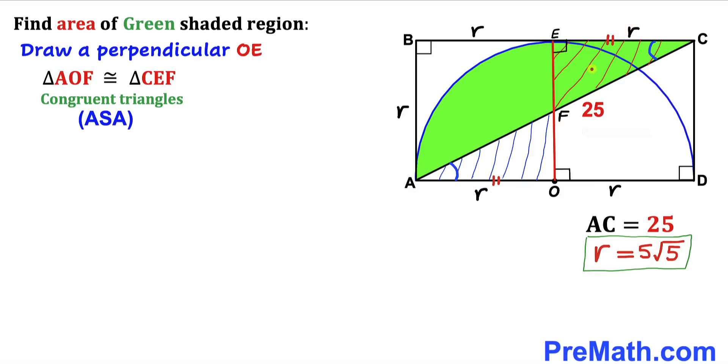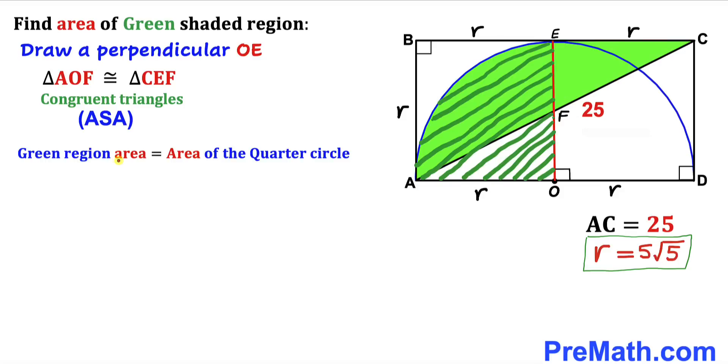Moreover this side EC is equal to this side AO since both of them are our radius R. Now since these two triangles are congruent their area is going to be same. So therefore we can see that this green shaded region area is going to be the area of this quarter circle.